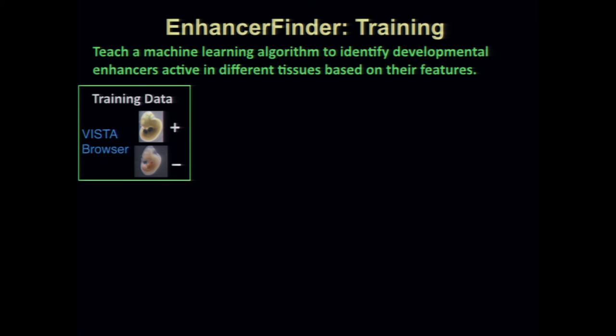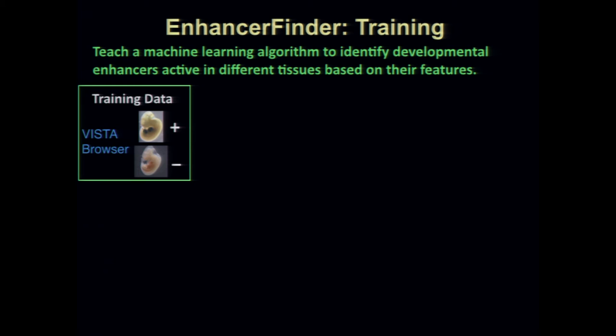There are many validated examples of enhancers from the VISTA browser — we'll hear from Len Pennacchio about that tomorrow. These are pictures of mouse embryos where a candidate enhancer has been transiently transfected into the single-cell embryo, and you can see staining in the tissues during development when that enhancer functions. This provides great training data for supervised learning.